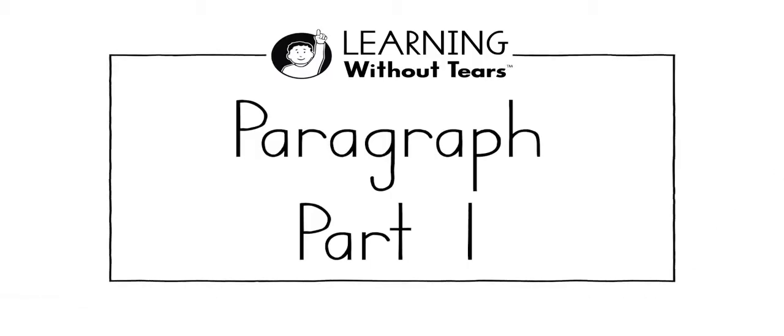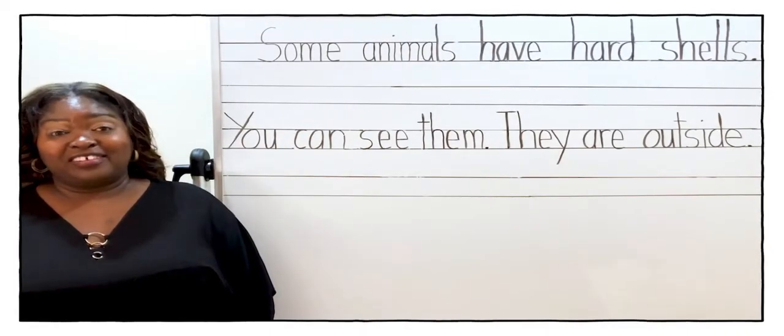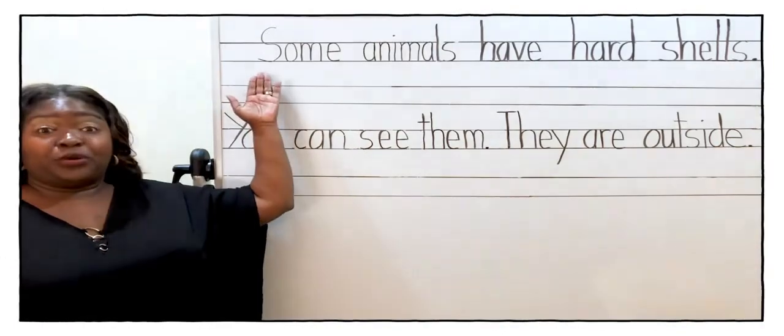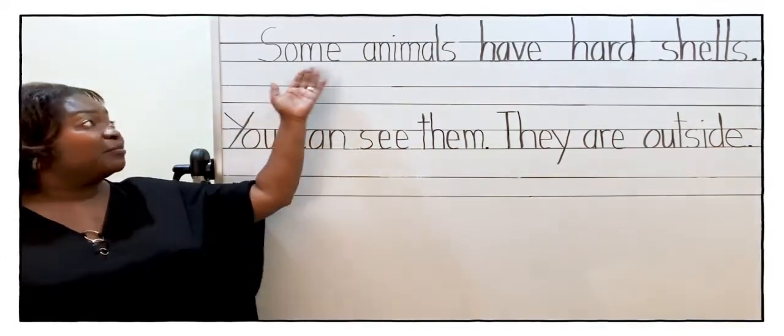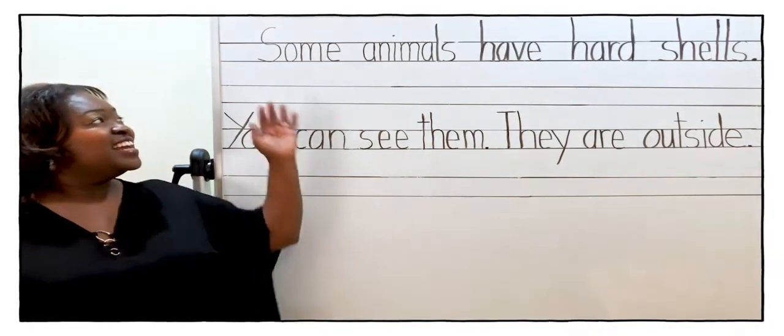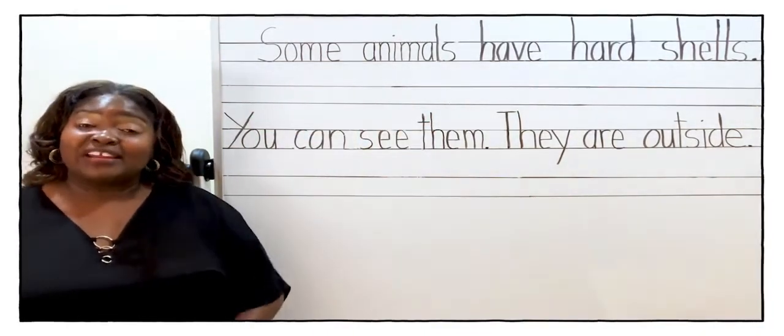Paragraph part one. Now we get to write another paragraph. Remember when we start a paragraph we always want to indent the word like we did here in the word some. In fact I want you to go ahead and try this sentence. Some animals have hard shells. Go ahead. Write it. Give it a try.